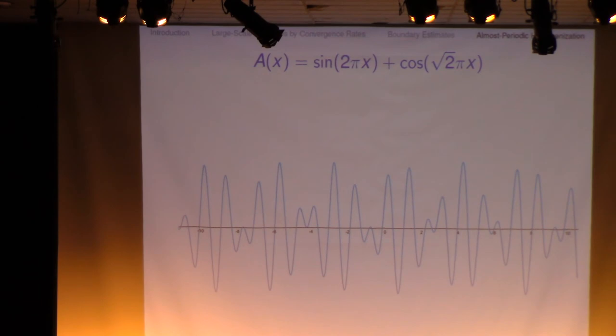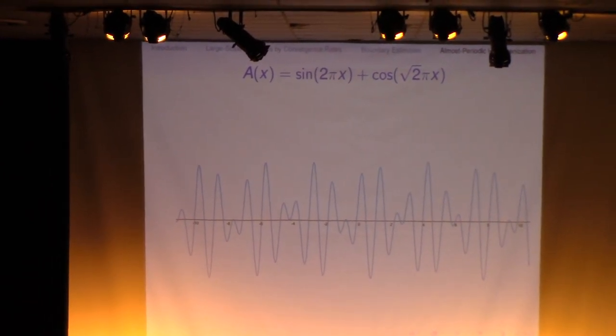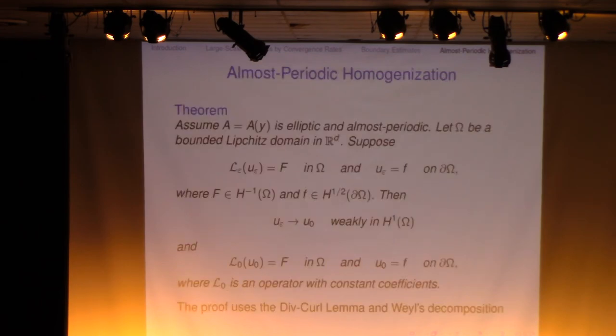All right. So here I show you the graph of this almost periodic function. So it's oscillating, just like a periodic function, but the graph never repeats itself. So the word almost periodic is that somehow that you can actually match two graphs to arbitrarily small.